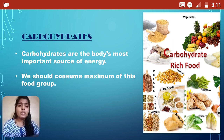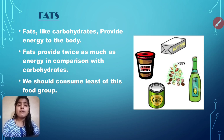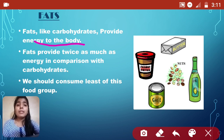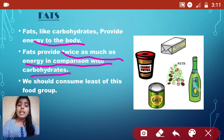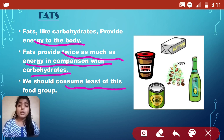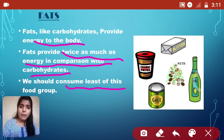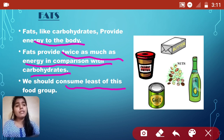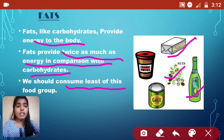Now let's see the next important nutrient: fats. Fats, like carbohydrates, provide energy to the body. But fats provide twice as much energy compared to carbohydrates. Even so, we should consume the least of this food group because it is not healthy for us — it makes us fat. Examples include butter, nuts, oil, ghee, peanut butter, cheese, etc.